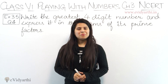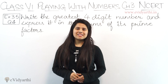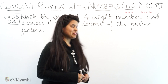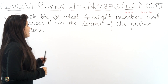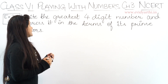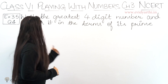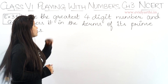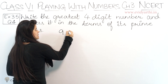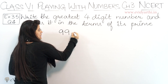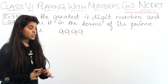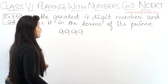Hello everyone, this is Mansi from evithyadhi.in coming to question number 4, exercise 3.5. In this question we have to write the greatest 4-digit number and express it in terms of its prime factors. The greatest 4-digit number is 9999. Now let's find the prime factors.